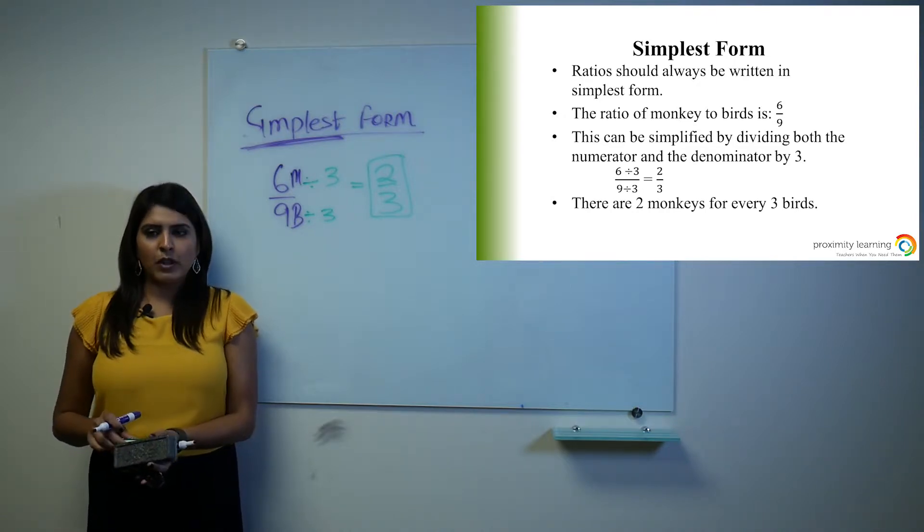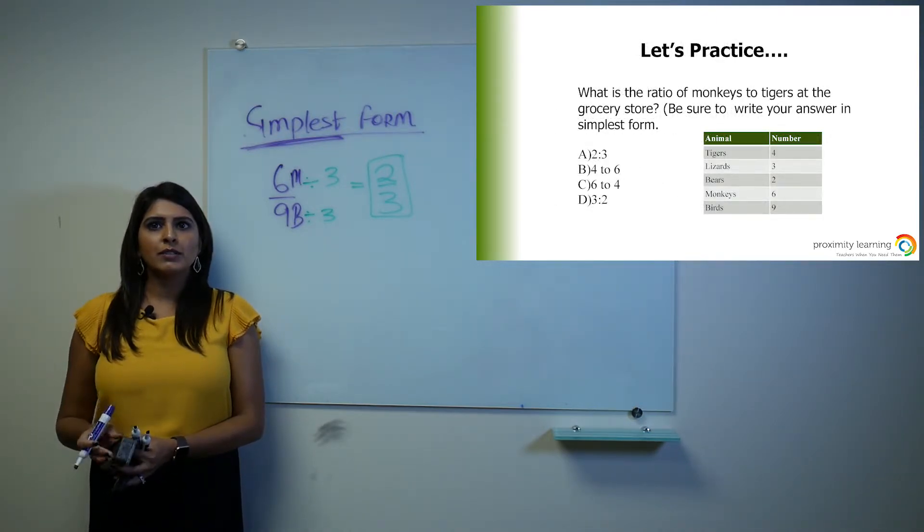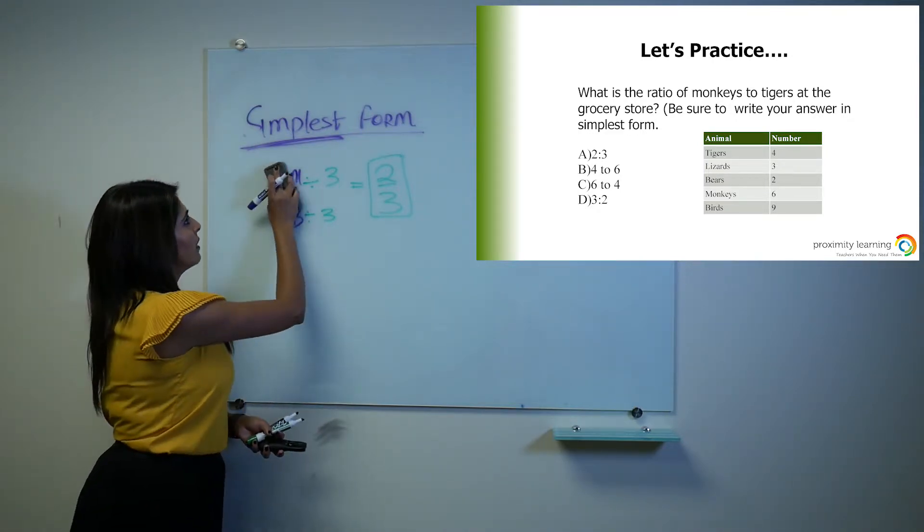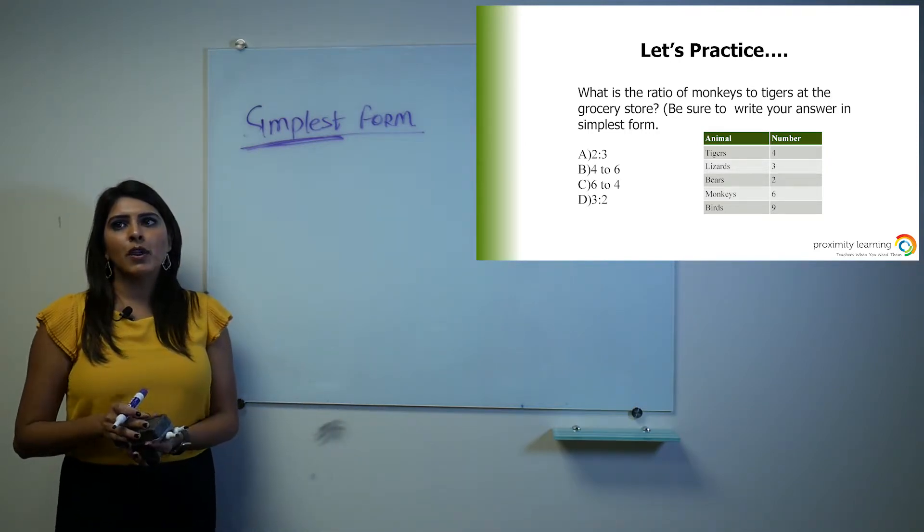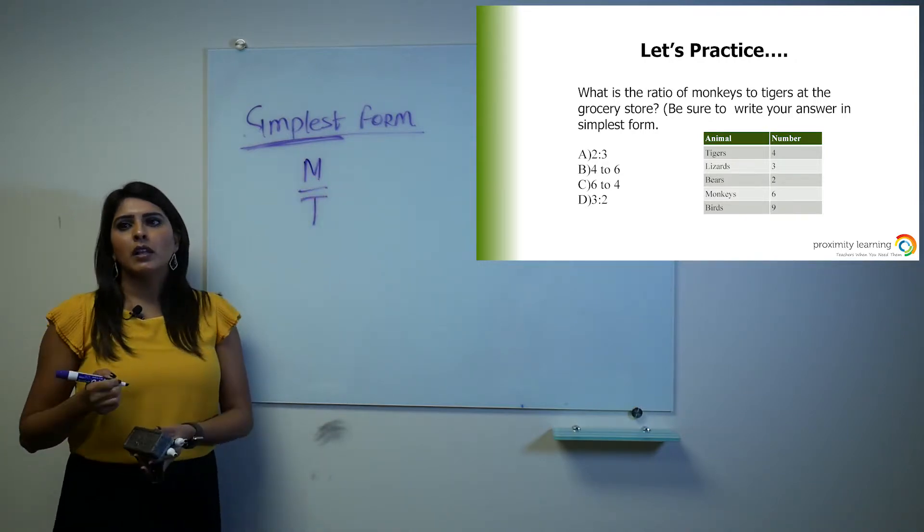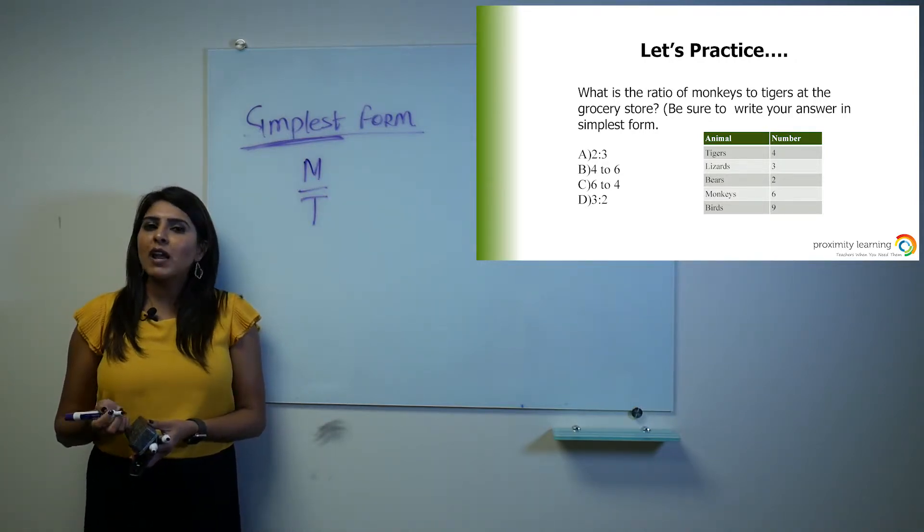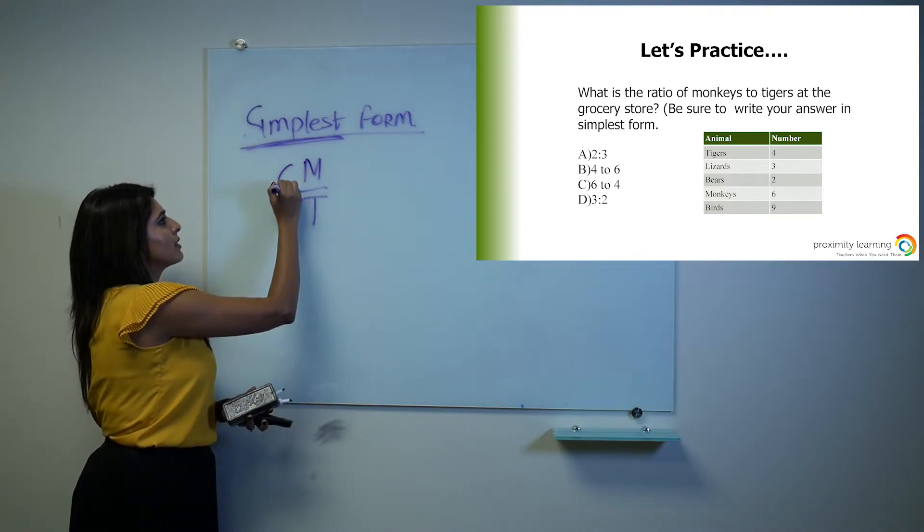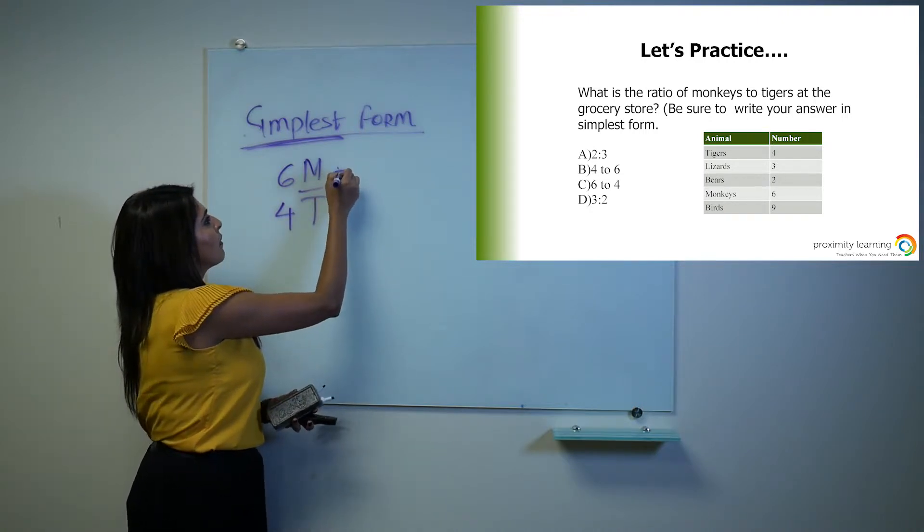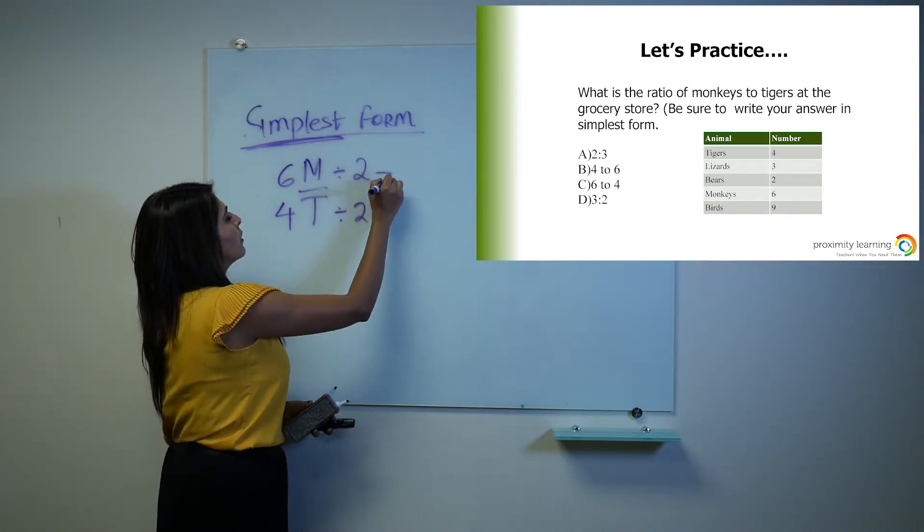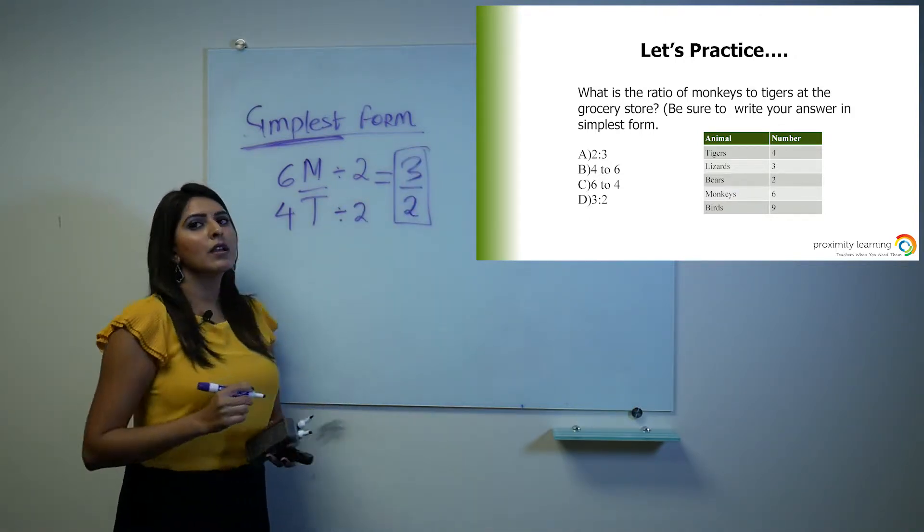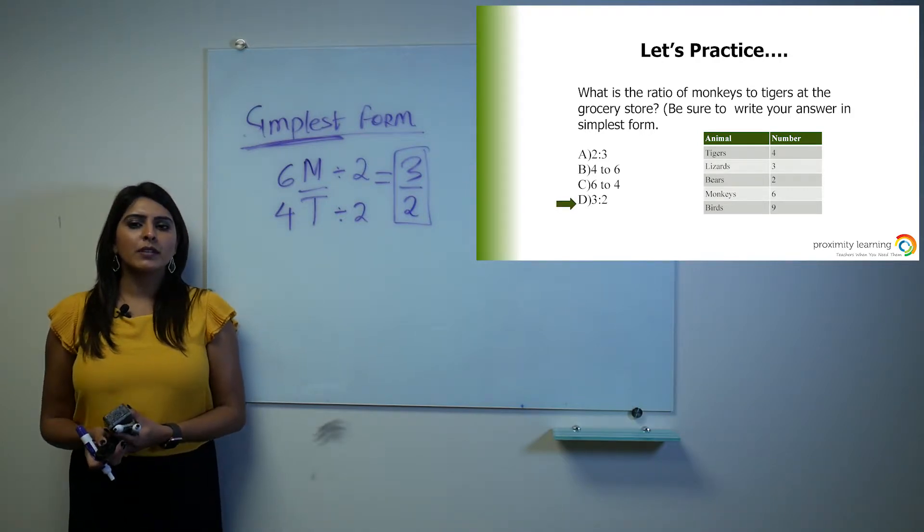Moving on to another practice problem, what is the ratio of monkeys to tigers at the grocery store? Be sure to write your answer in the simplest form. Here you are trying to find the ratio of monkeys to tigers. Let's go ahead and identify how many monkeys we have. In the table there are 6. There are 4 tigers. You can simplify it by dividing them both with 2, which will give you 3 over 2 as your final answer, which is answer choice D.